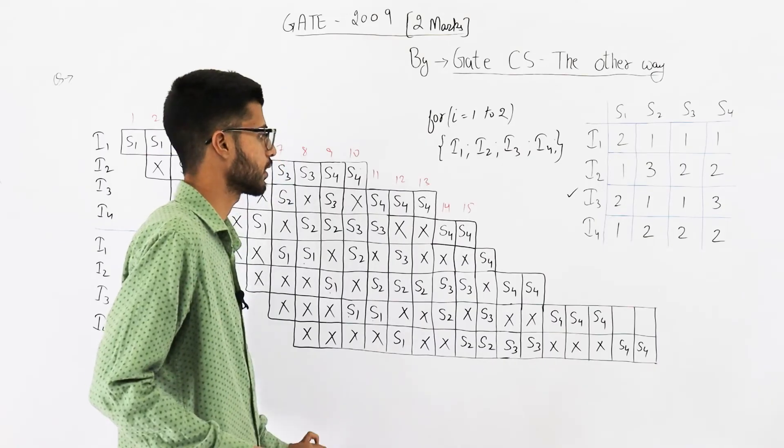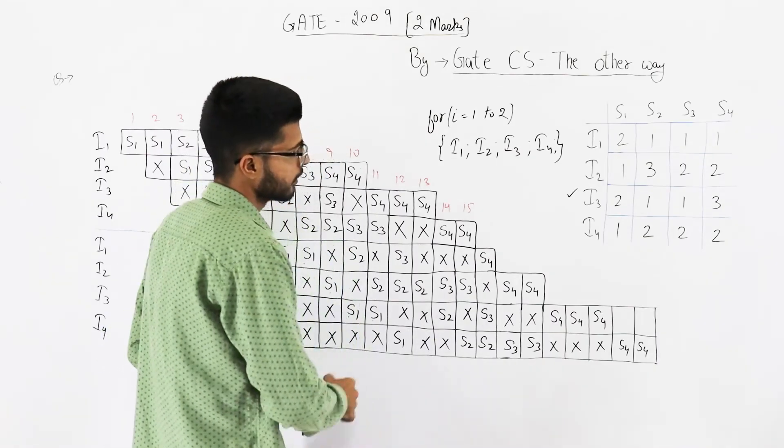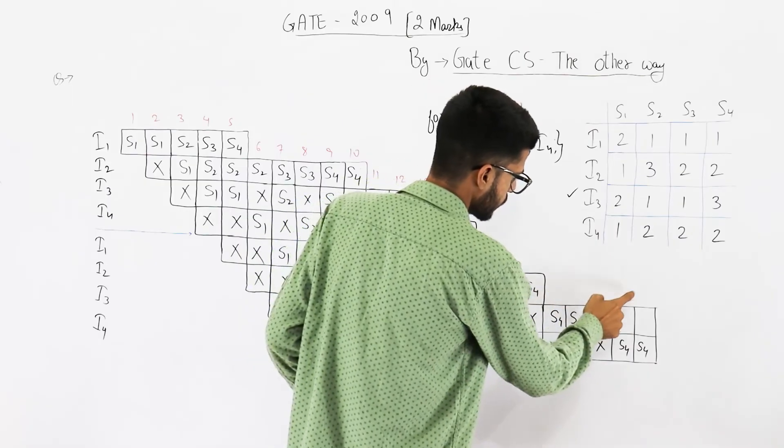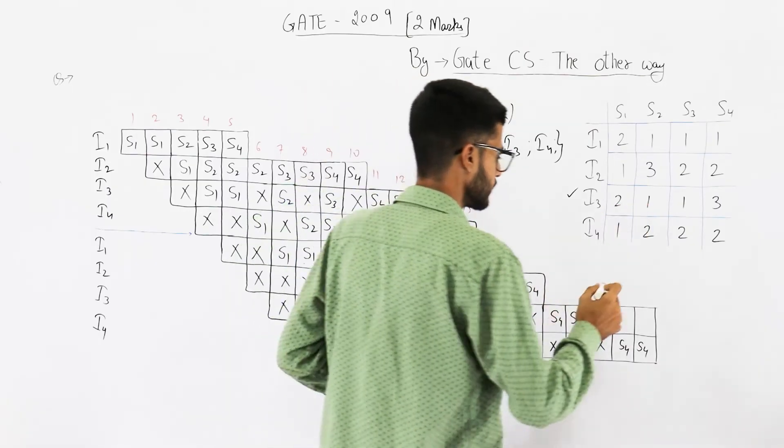Let's try to count how many clocks are required: 15, 16, 17, 18, 19, 20, 21, 22, 23. These are 23 clocks.